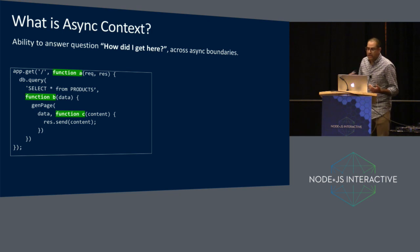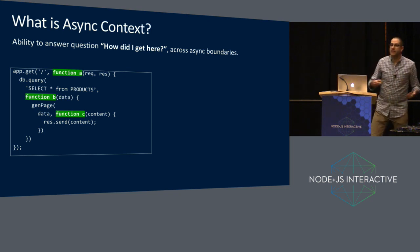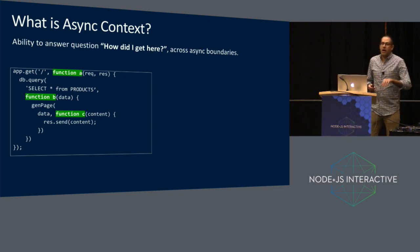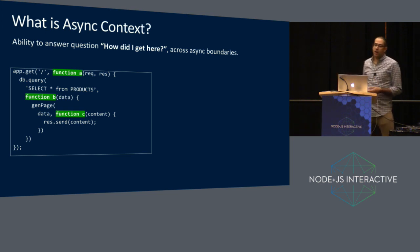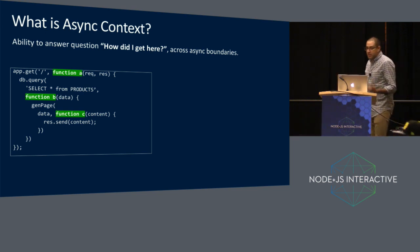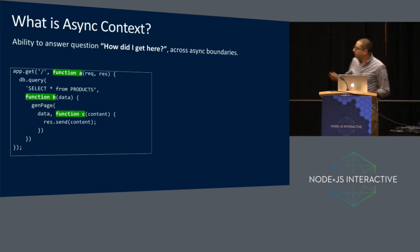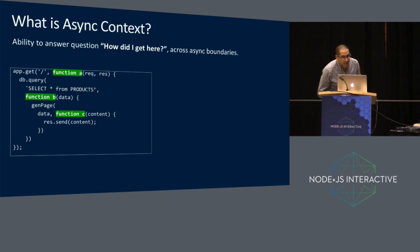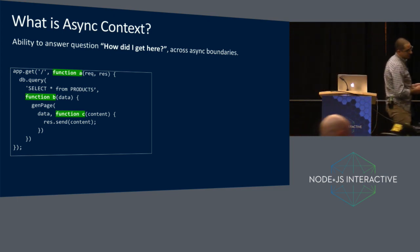To sort of fill out your intuition, here's some example code. This is some request app. The request app is processing HTTP requests. There's function A — function A is a callback, an HTTP request comes in, function A gets executed. It calls db.query and passes in a callback function B.